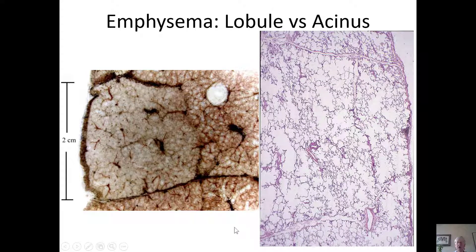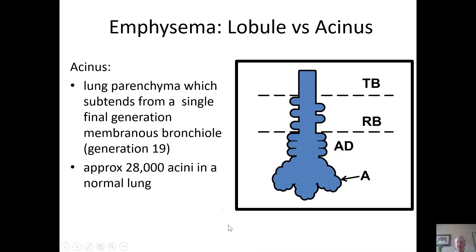If you followed the earlier sessions on normal lung anatomy, you'll have learned the difference between lobules and acini. Just to recap, a lobule is a gross term defined as the amount of lung parenchyma which is surrounded by venous septa and/or pleura, and can be seen here on a microscopic slide with venous septa. The acinus is defined as the amount of lung tissue which is subtended from one terminal membranous bronchiole, and thus includes three generations of respiratory bronchioles, alveolar ducts, and alveoli.